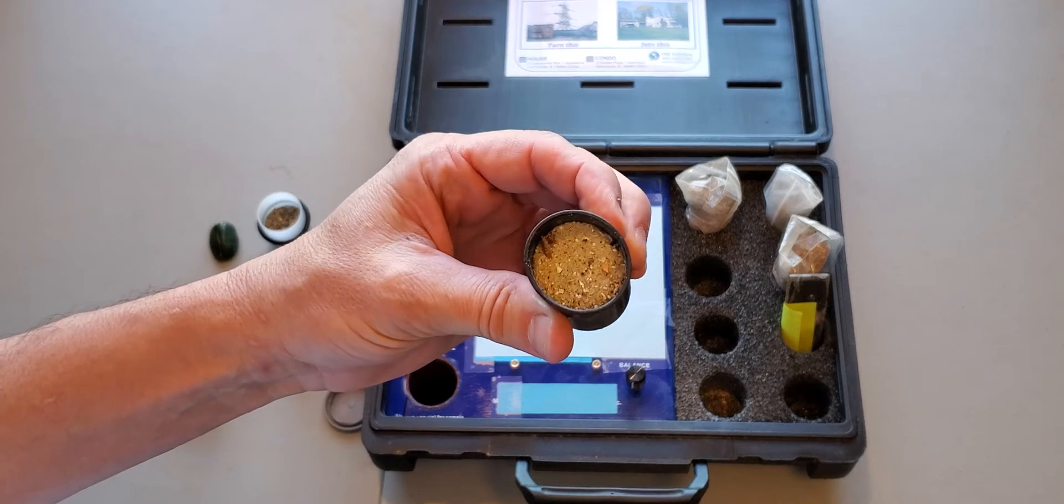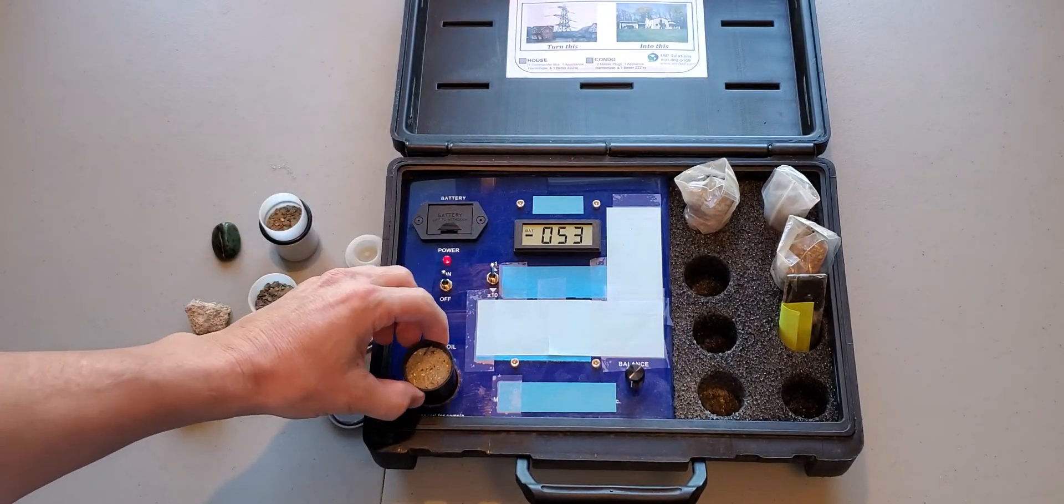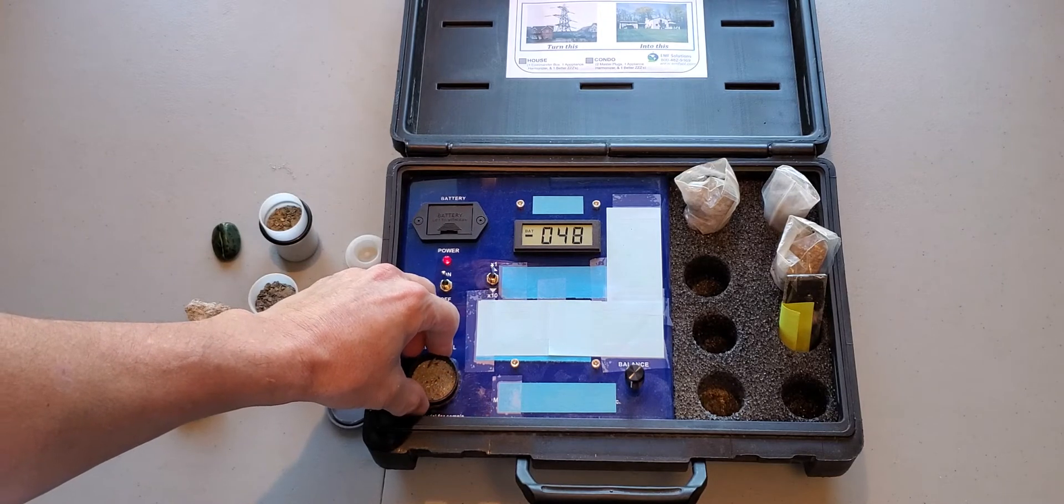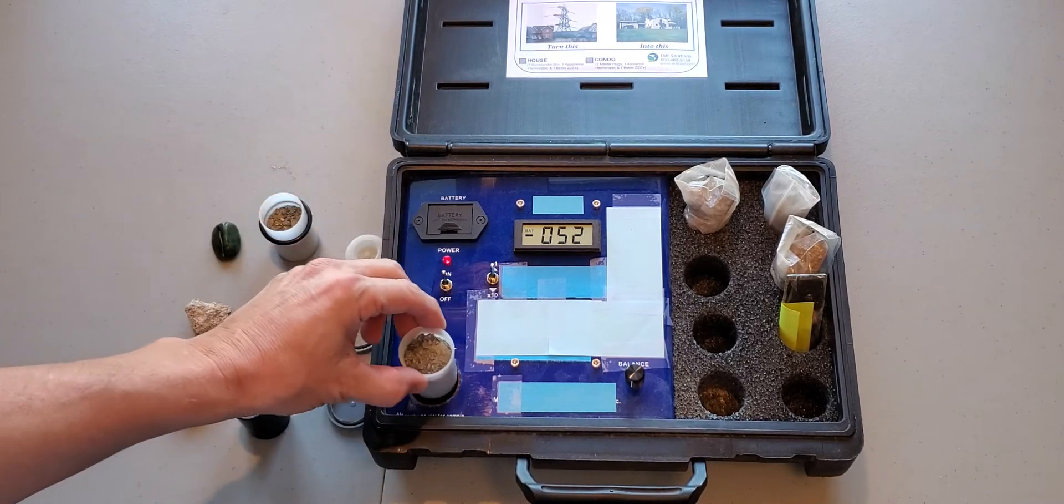So, this is the first material, and this is a sand-like, gravel-like material. We can drop this in, and we see that the meter hovered close to zero, and it still does. There's no real change. That didn't do us any good.